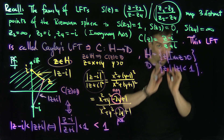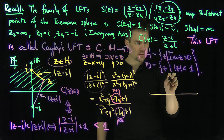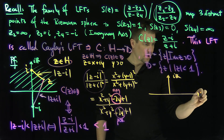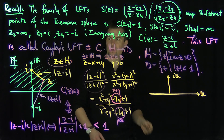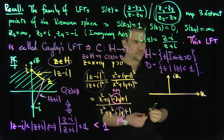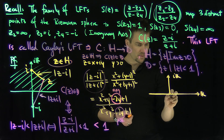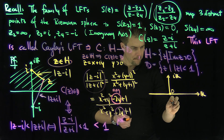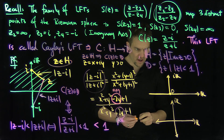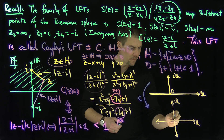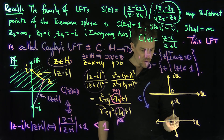Now, the cool thing is what happens to the geometry. LFTs map lines and circles to lines and circles. The Cayley map takes the real axis to the unit circle. Where does 0 go? If we plug Z equals 0 into the Cayley map, we get negative i over i, which is negative 1. So 0 maps to negative 1.